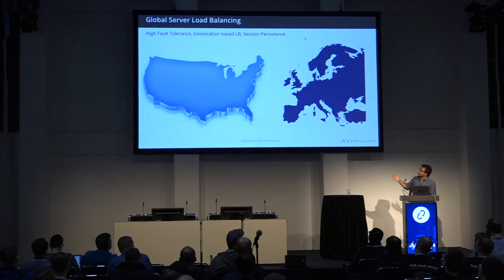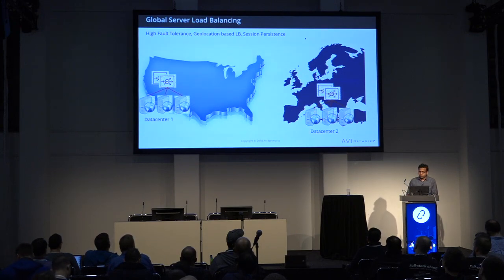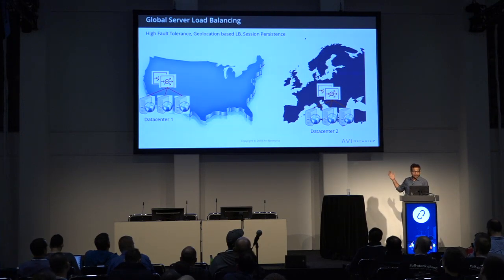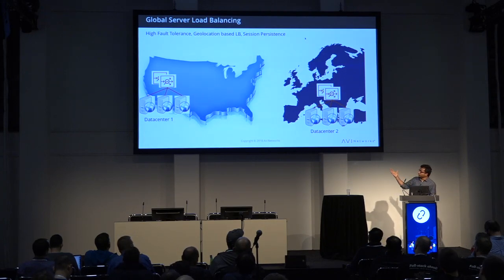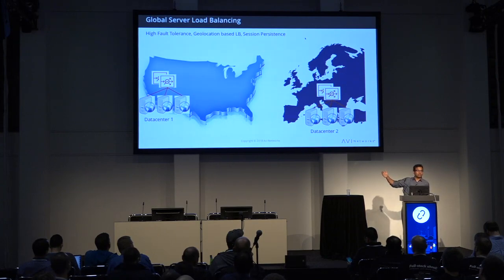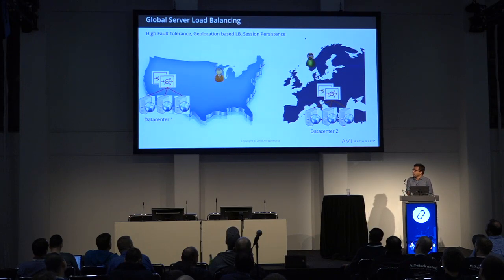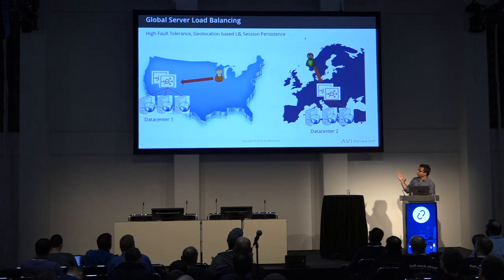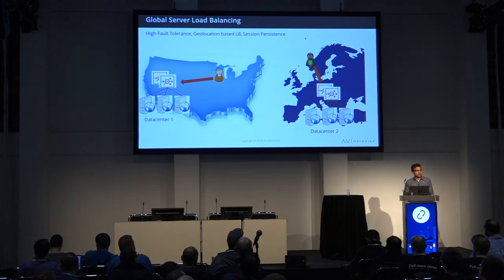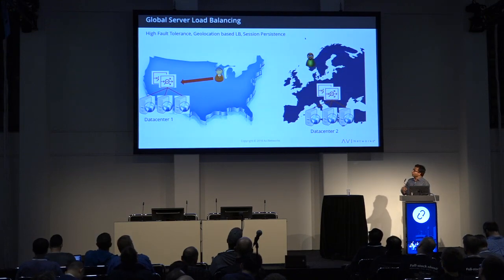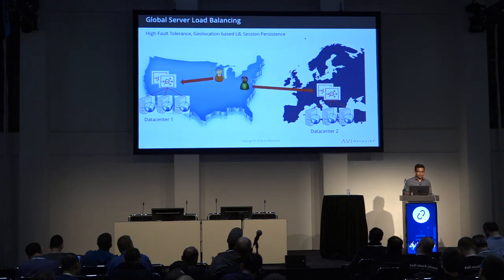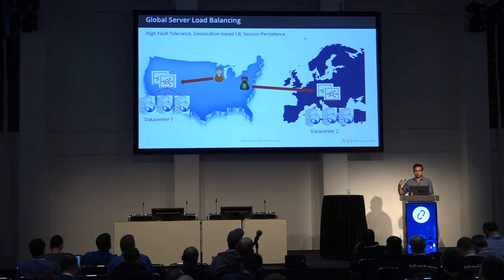Taking one step further, global server load balancing is the case where you set up your applications across multiple data centers and global regions. The main reason is very high fault tolerance — if one data center goes down, you have backups elsewhere. If both systems are up, you can also do geolocation-based load balancing, routing users in one region to the closest application for lower latency and better perceived performance. You also want session persistence so that if your user moves from one location to another, they are still preserved to the same site — similar to local load balancing, but at the site level.